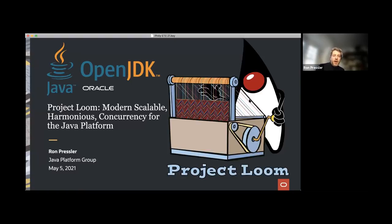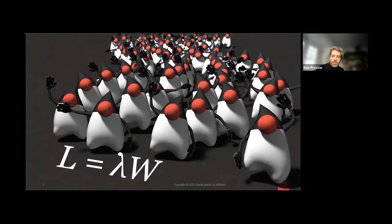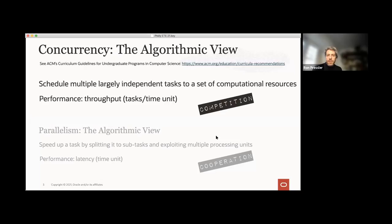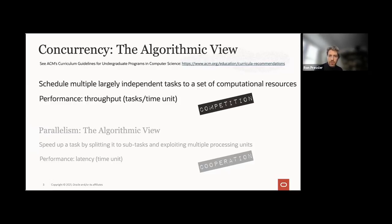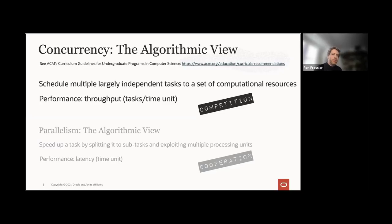Project Loom is OpenJDK's attempt to modernize concurrency on the Java platform. Let's start by discussing what concurrency is. The definition I like using, which is also recommended by the ACM, is that concurrency is the problem of scheduling a largely independent set of tasks onto a limited set of computational resources. That is in contrast to parallelism, which is performing one task faster by splitting it into multiple pieces. Concurrency is about competition over resources; parallelism is cooperation to make solving one job faster. We're not going to be talking about parallelism, only about concurrency.